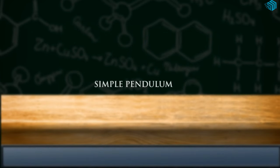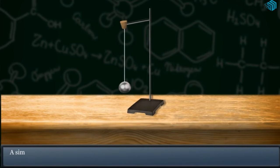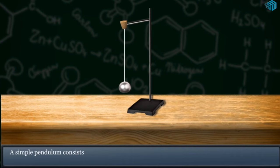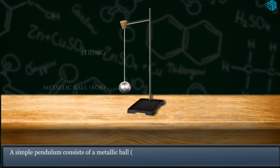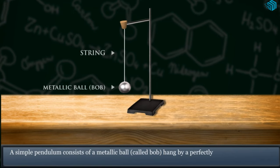A Simple Pendulum. A simple pendulum consists of a metallic ball called bob, hung by a perfectly inextensible and weightless string.